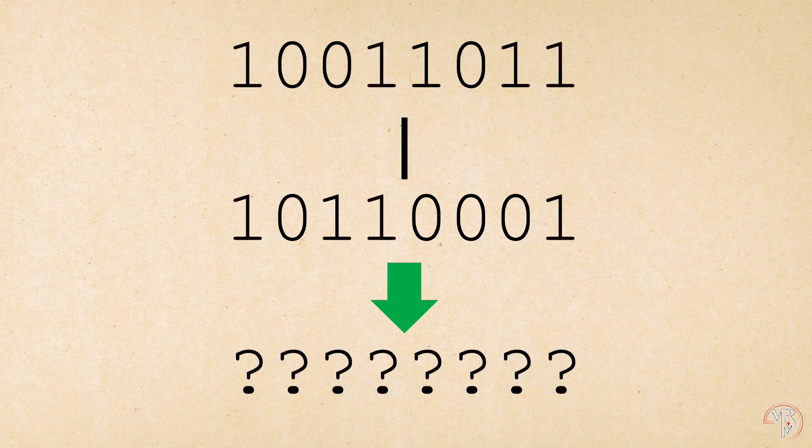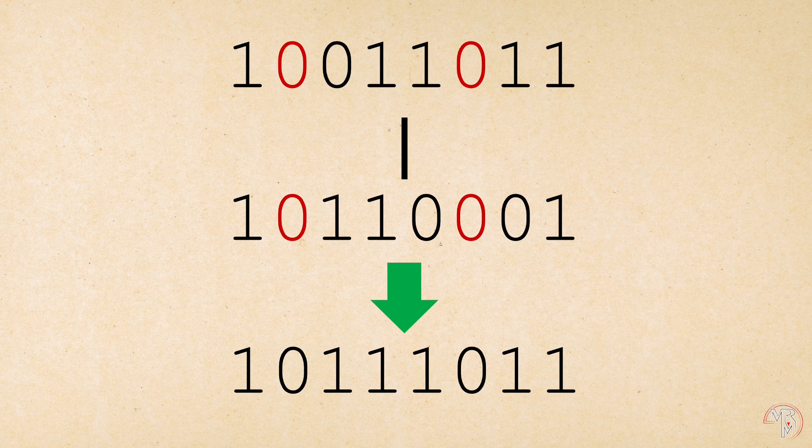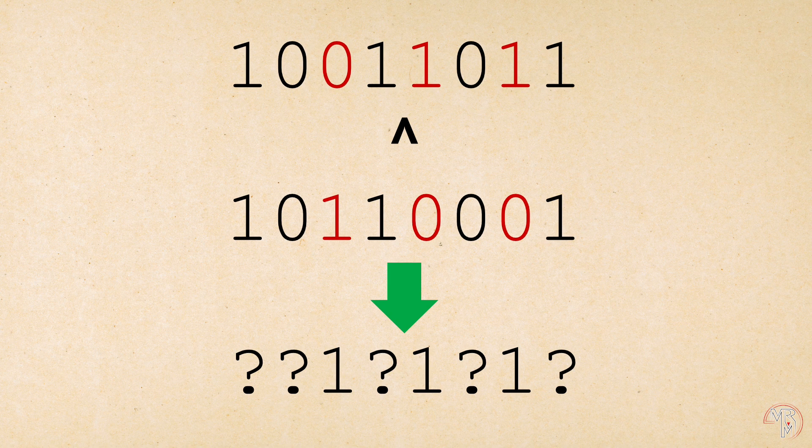For bitwise OR, if both bits are set to zero, the resultant bit is set to zero. Otherwise, the resultant bit is set to one. For bitwise XOR, the resultant bit is set to one if only one of the two bits is set to one. Otherwise, the resultant bit is set to zero.